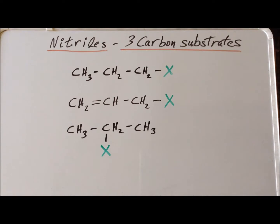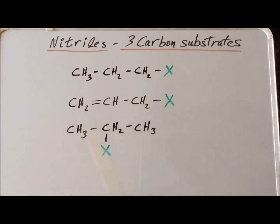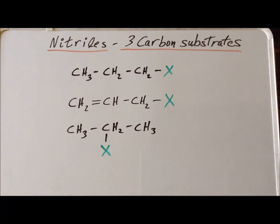In this video, we are going to compare the synthesis of nitriles from three different types of three-carbon substrates. The first type is the 1-halopropane. The second is the 3-halopropane, which is also the allylic substrate. And the third and final three-carbon substrate is the 2-halopropane.